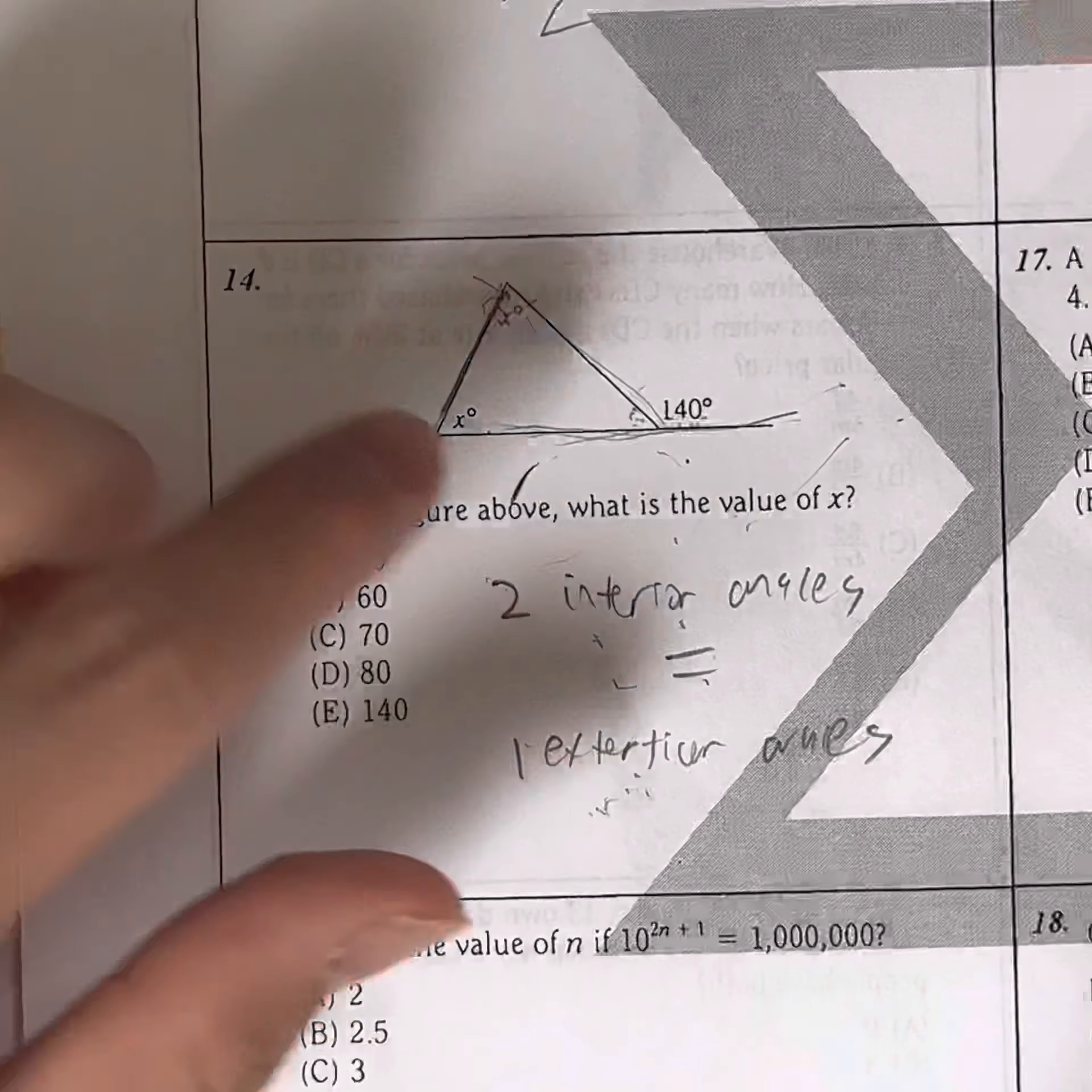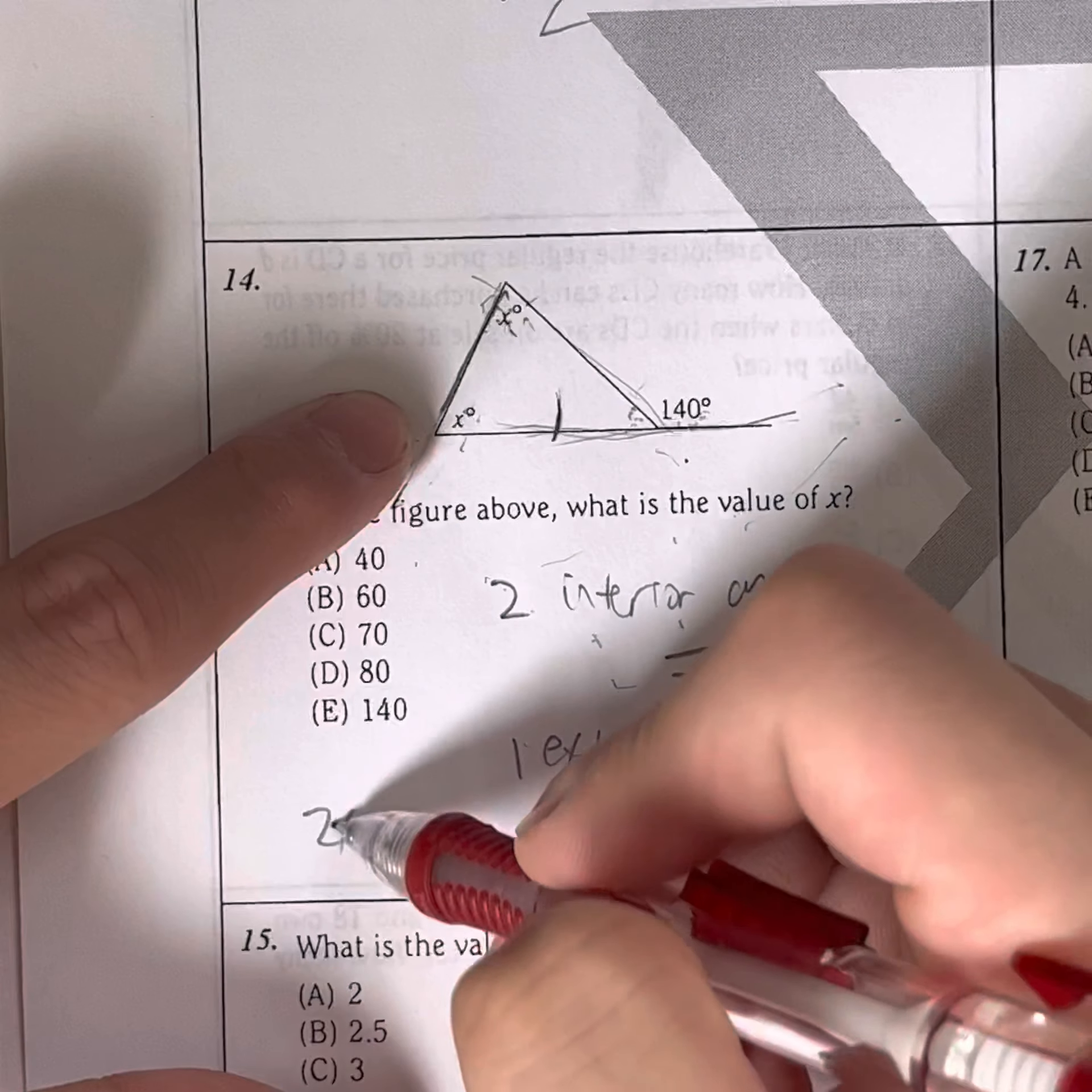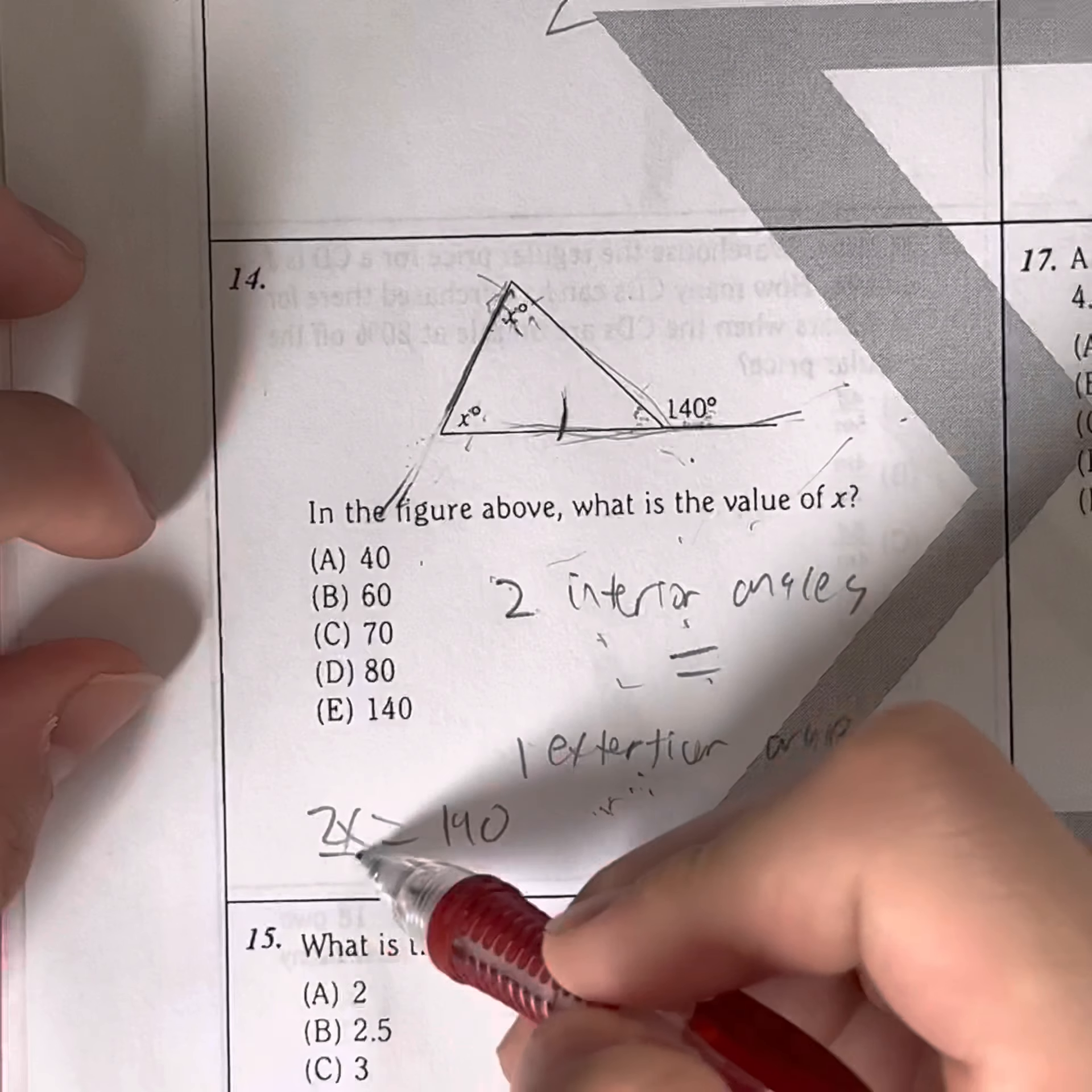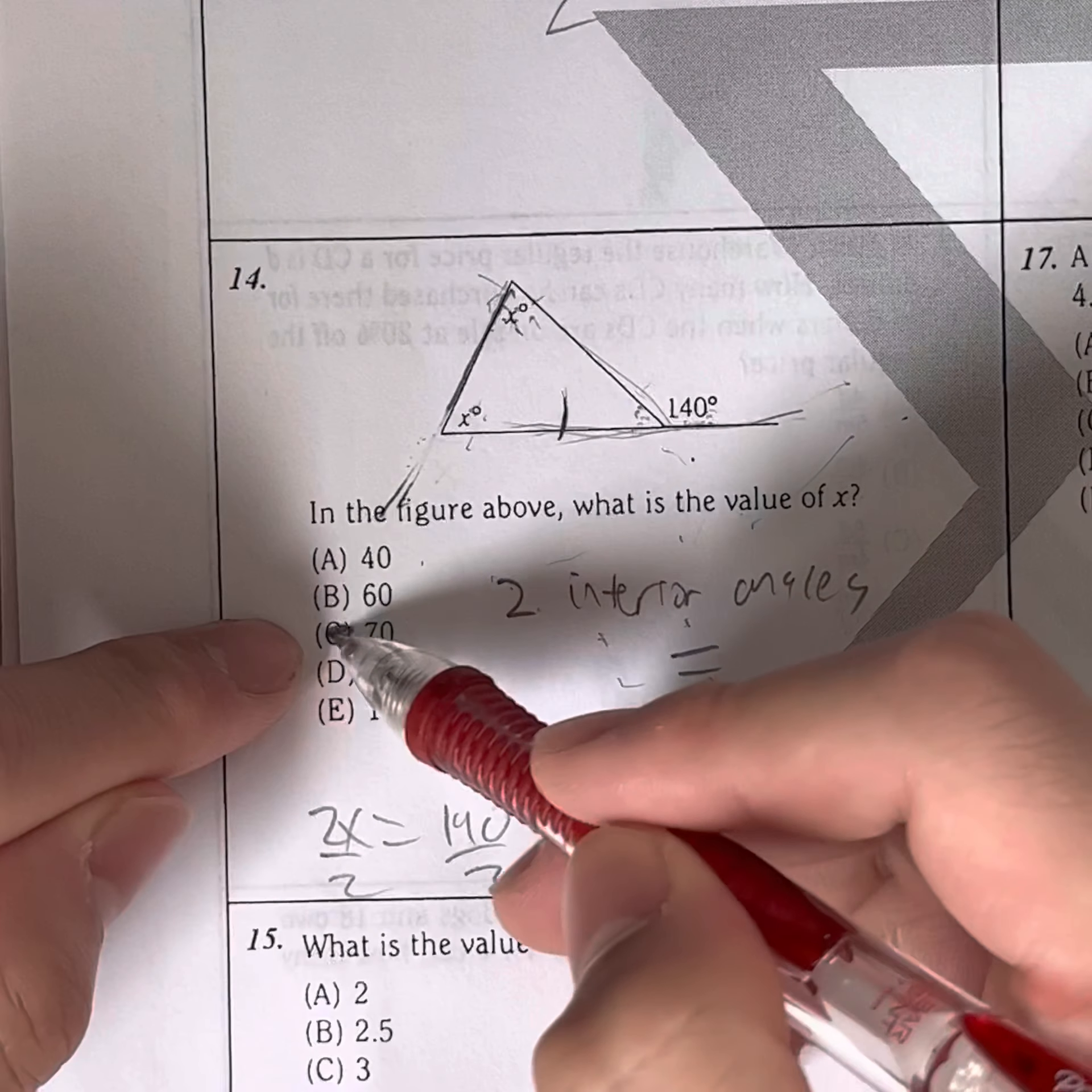So in this case, let's just use the eraser. In this case, these two are your interior angles because it's not touching this angle. So the two of them, X plus X, 2X, is equal to this angle on the outside, 140. To find X, we just divide both sides by 2, giving us X is equal to 140 divided by 2, which is 70. Meaning your answer has to be C.